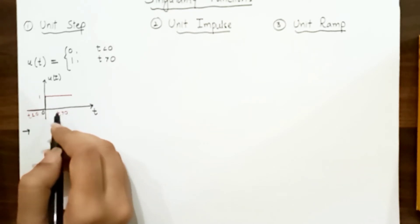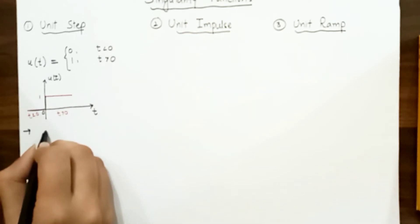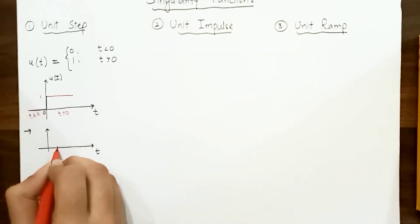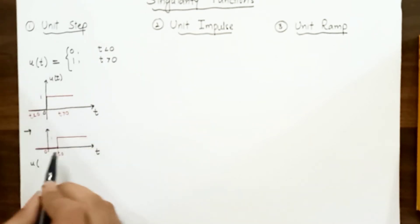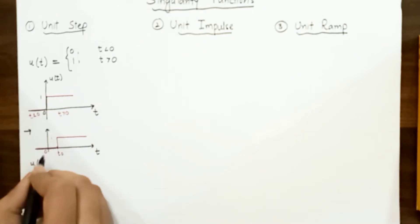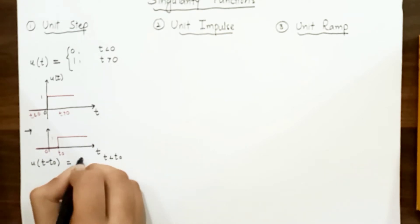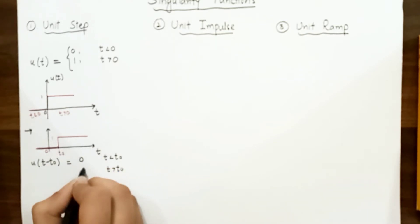Now suppose this abrupt change from 0 to 1 does not occur at t equals 0, but occurs at some later point t₀ greater than 0. Drawing this function, the abrupt change occurs at t₀. We write this as u(t − t₀), which equals 0 for t less than t₀, and equals 1 for t greater than t₀.